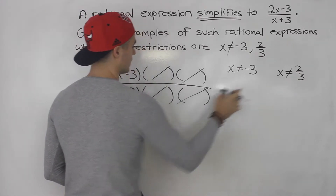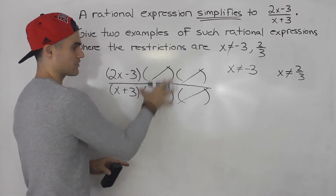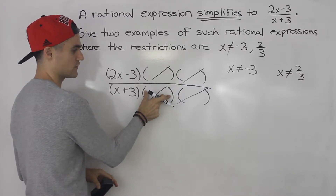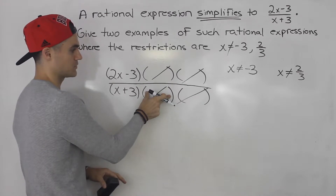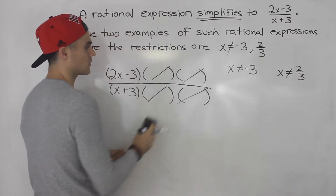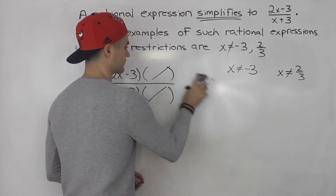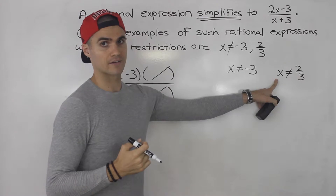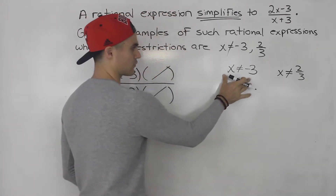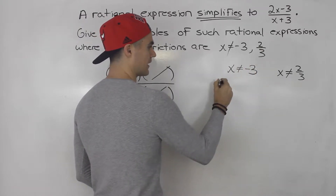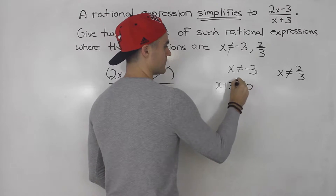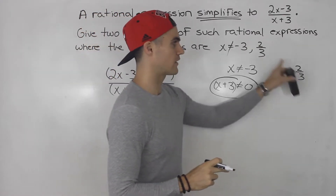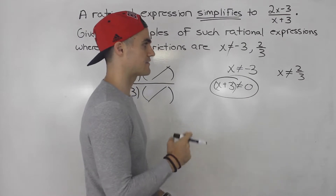But x cannot equal 2 over 3 — notice that none of the factors here give us this restriction. So we can tell that something had to cross out. There was some bracket before that crossed out. When we set that factor equal to zero it gives this restriction. So we're going backwards now — we know there was one other factor that crossed out, and we have to figure out what it was.